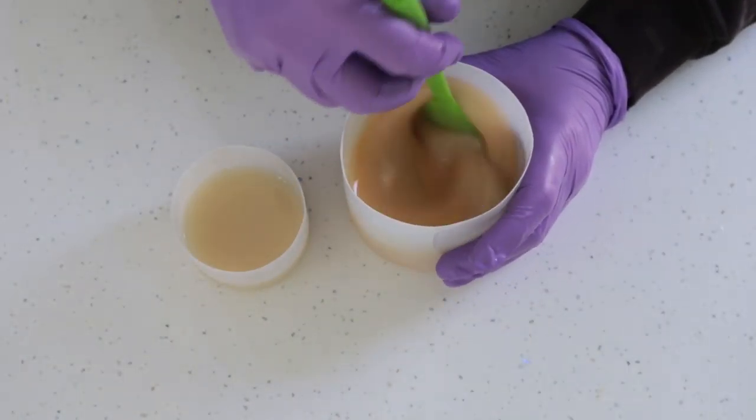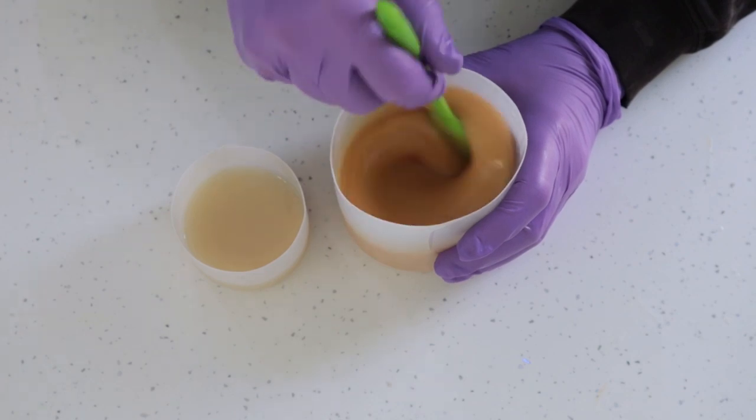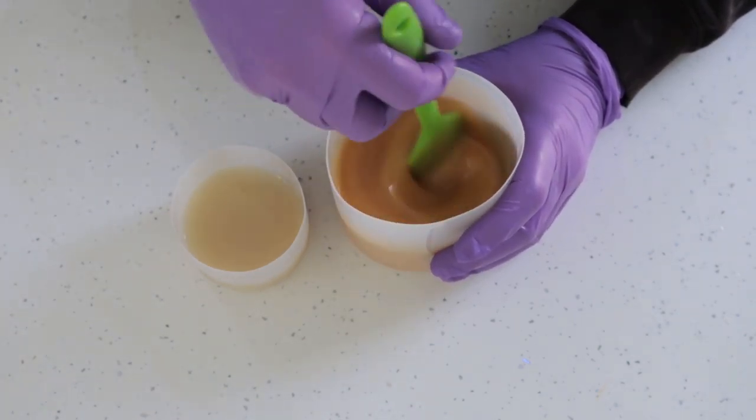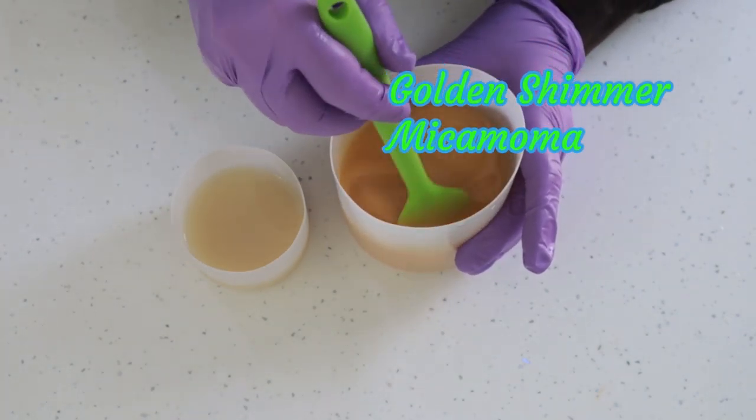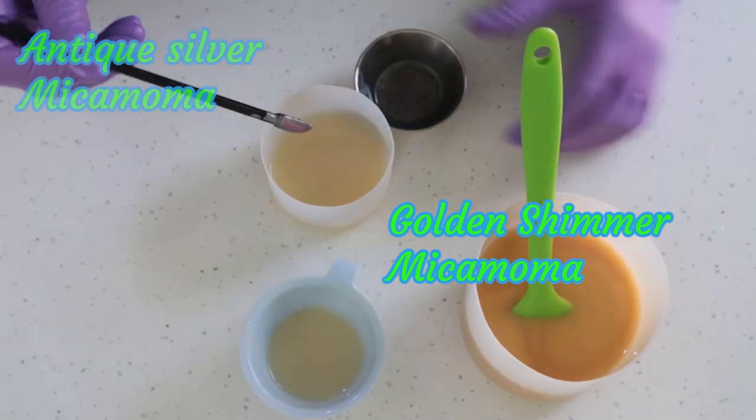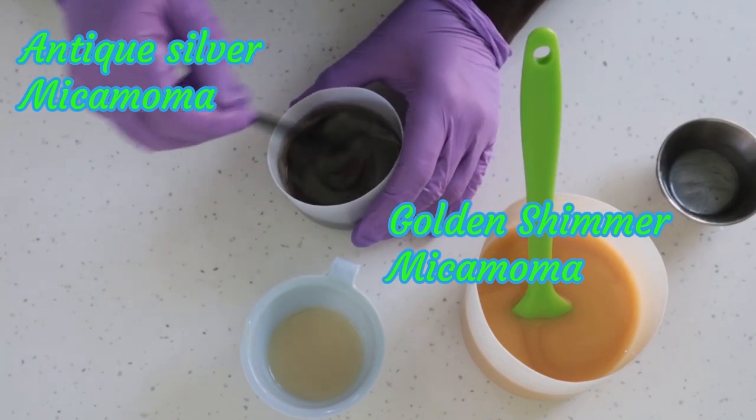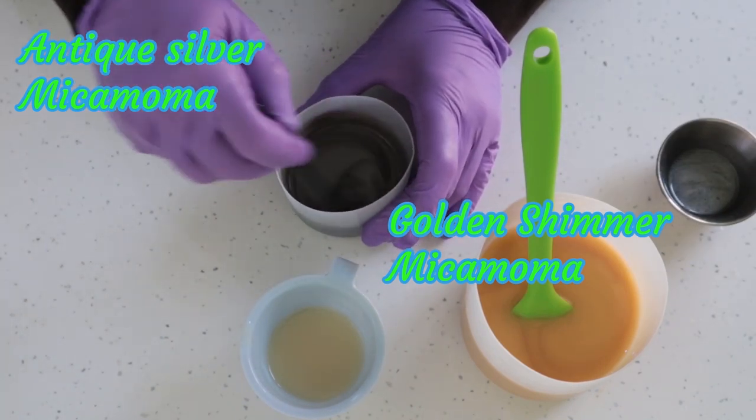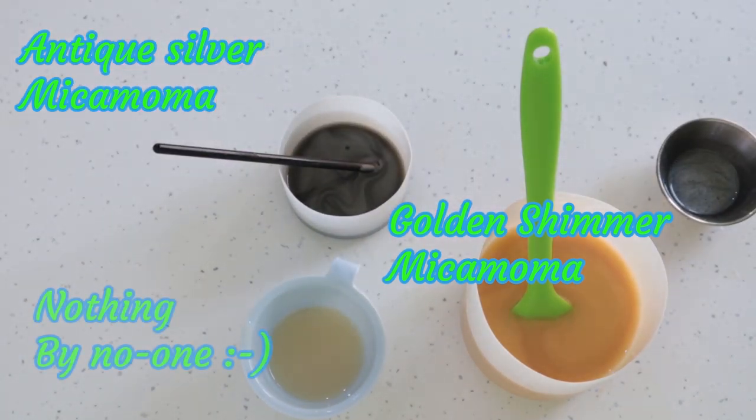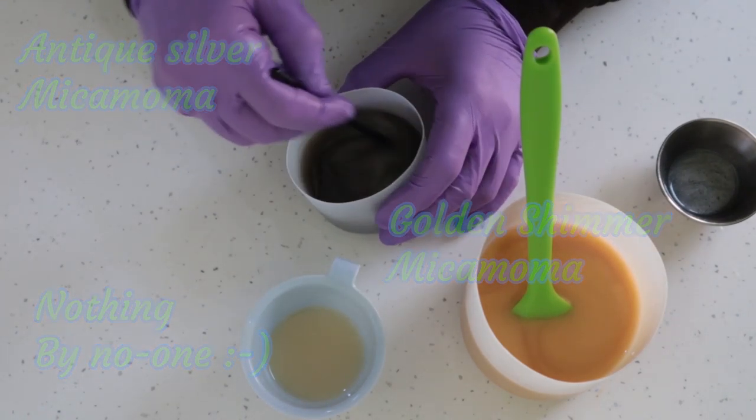And then color wise I want to keep this fairly light so the bulk of my color is going to be Golden Shimmer from Micamama. I'm going to add some little tiny flecks of antique silver from Micamama as well just so it's not a dead flat surface and then a little bit of just plain soap batter again just to add some highlights so that we haven't just got one complete solid color.